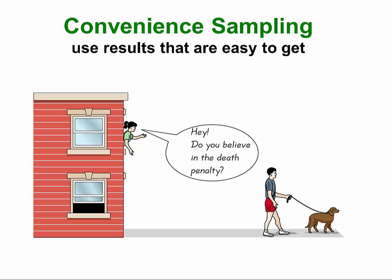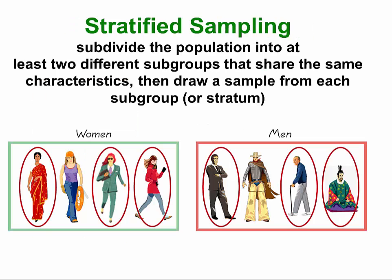Convenience sampling is a method of sampling that you've probably run into at the mall or on your way out of a supermarket, where you're asked to participate in a particular survey. It's convenient for the person doing the survey, but usually not very convenient for you — especially if you're leaving the supermarket and you have some ice cream in the bag that's melting as you're taking the survey.